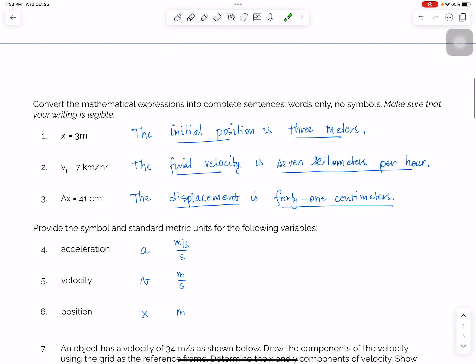So for the first question, all you needed to do was to convert the mathematical expression into sentences. This first one is the initial position is 3 meters, so no symbols. This one was worth 2 points. I gave a point for initial position and a point for 3 meters. The second one is the final velocity is 7 kilometers per hour. One point for final velocity, one for 7 kilometers per hour. And then the last one, the displacement is 41 centimeters. One point for displacement, one point for 41 centimeters.